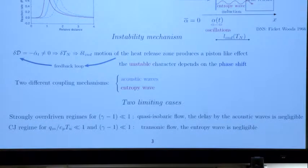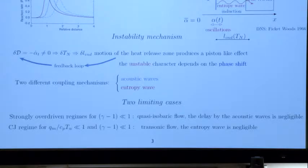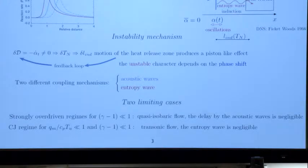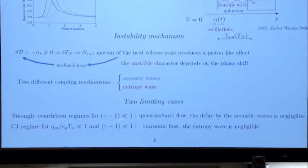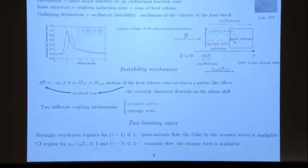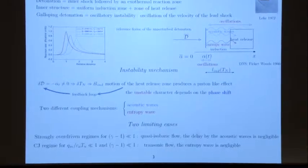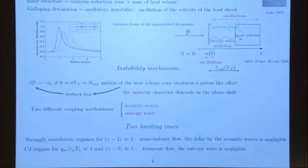In the other limit — the Chapman-Jouguet limit — acoustics are essential because you have fully compressible phenomena even behind the shock. In the strong overdriven limit, the acoustic waves have effectively infinite velocity, so to close the loop is infinitely quick, and the only delay in the loop is due to the entropy wave. In the CJ limit it is just the opposite: the entropy wave is negligible and only the acoustic wave must be taken into account.